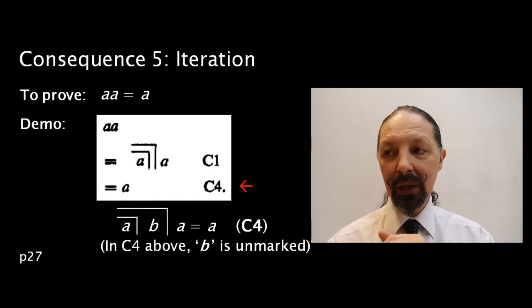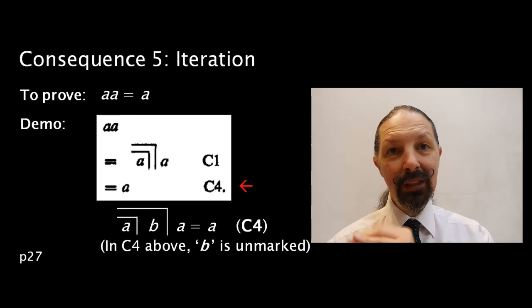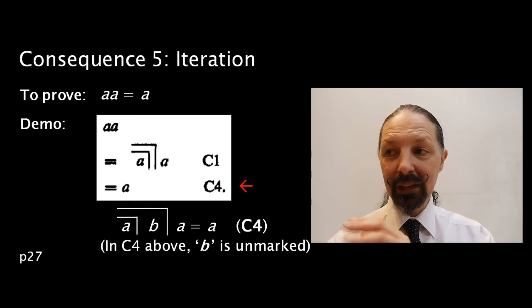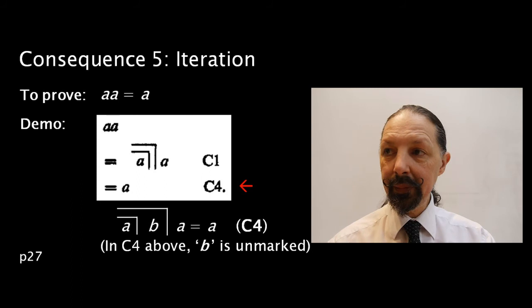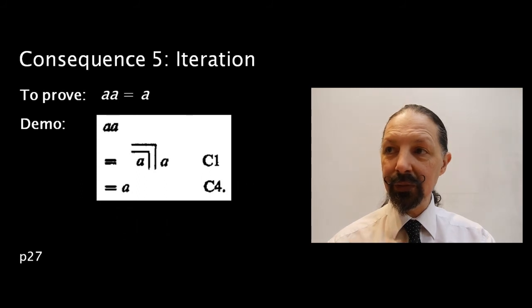It's A mark B mark over 2 A is equivalent to A. Now, if we've applied it here, we are using B as an unmarked state. You could take this through both situations where B is marked, B is unmarked, and see what happens. I'll leave that for you to do. For now, you can see that if B is unmarked, then this resolves. And consequence five is proven.